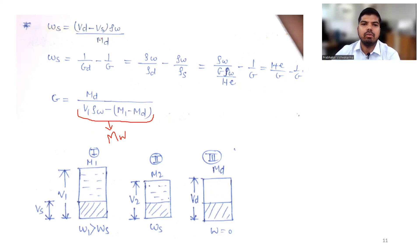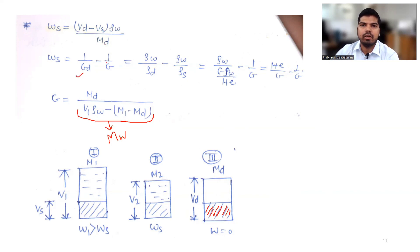Shrinkage limit can also be written as Ws = (Vd − Vs) × ρw / Md. Rearranging this, Vd × ρw / Md represents Gd and Vs × ρw / Md represents G, where G is the specific gravity. Therefore, shrinkage limit equals 1/Gd − 1/G. Specific gravity G is the weight of solids divided by the weight of water, which can be expressed as Md / (V1 × ρw − (M1 − Md)).